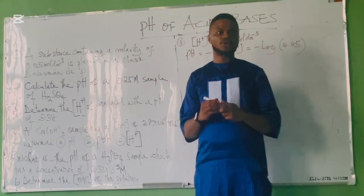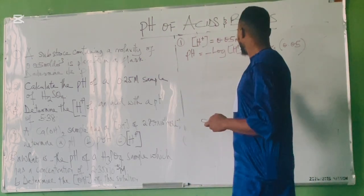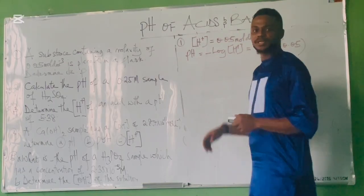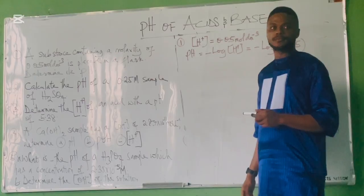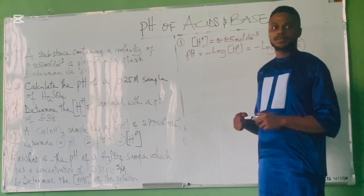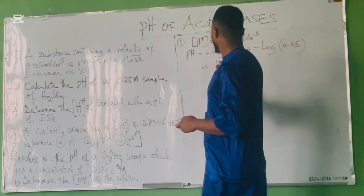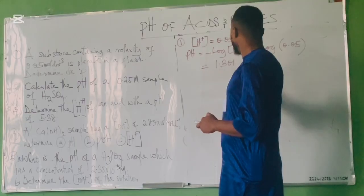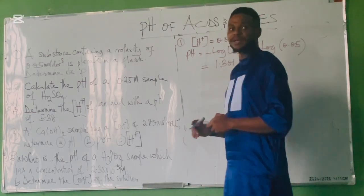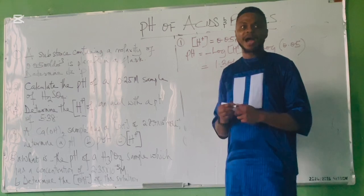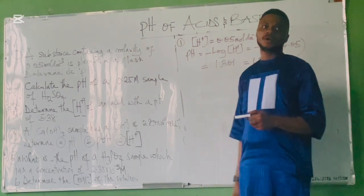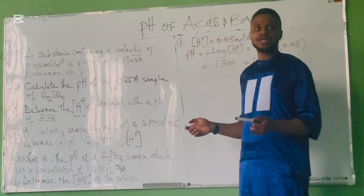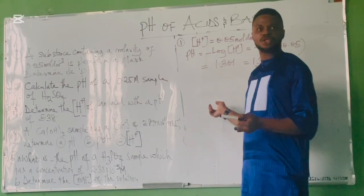pH = −log[H⁺] = −log(0.05). Calculating −log(0.05) gives us the pH. Use your calculator to compute −log(0.05) to get the pH value.